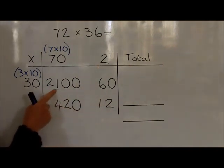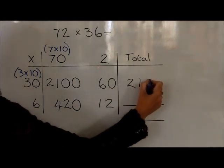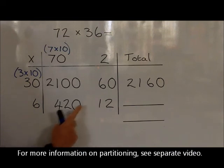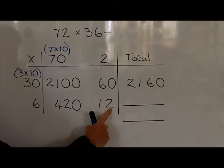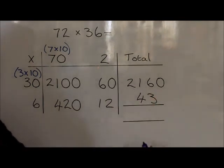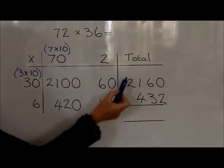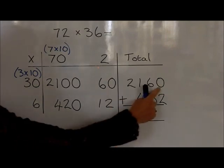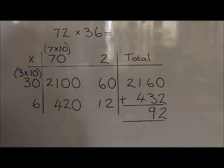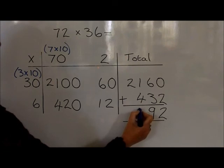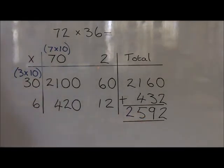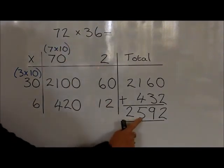We now add this row together, so that 2,100 plus 60 is 2,160. And we add 420 to 12 — we can partition the 12 into a ten and a two, so 420 plus 10 is 430, plus another 2 is 432. We write the 400 underneath the 100, the 30 underneath the 60, and the two units under the no units. We now add together our total, starting with the least significant digit: 0 plus 2 is 2; 60 plus 30 is 90; 100 plus 400 is 500; and 2,000 plus no thousands is 2,000. Therefore, 72 times 36 is equal to 2,592.